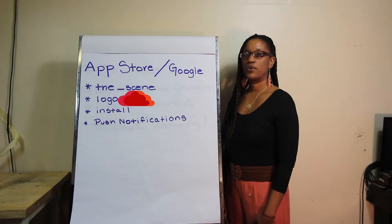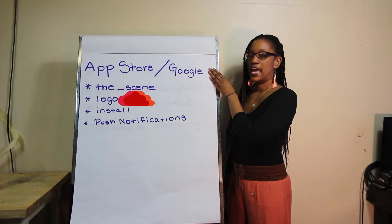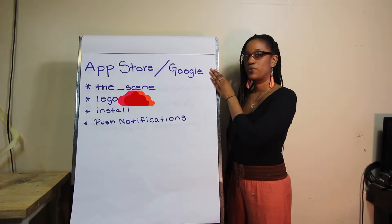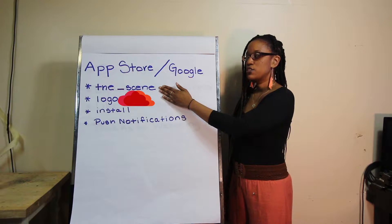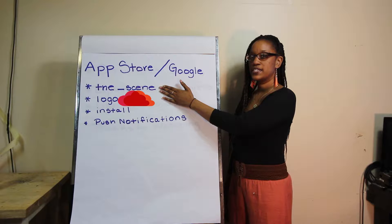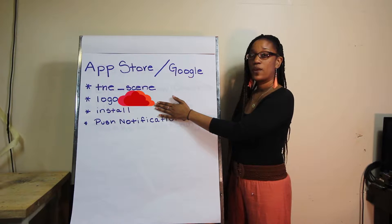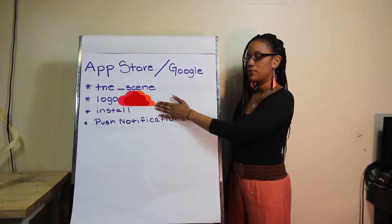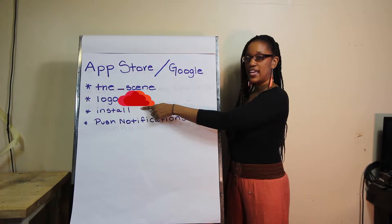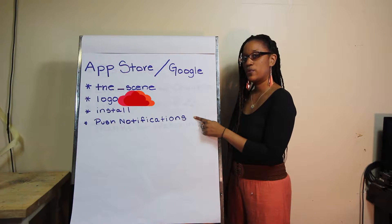Here's a quick review of what we've just done. We downloaded the Scene app using App Store or Google Play. We searched for the Scene using all lowercase and no caps — the underscore scene. We were able to identify the correct app by the red cloud logo. We installed the app and accepted push notifications so that we would not miss anything important.